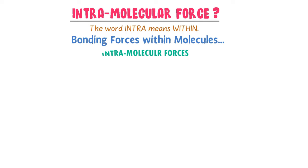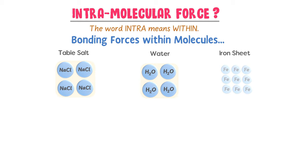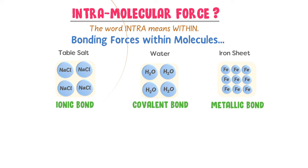For example, consider a freehand diagram of table salt, water, and iron sheet. We know that table salt contains an ionic bond, water contains a covalent bond, and iron sheet contains a metallic bond.